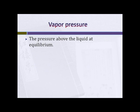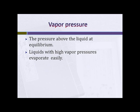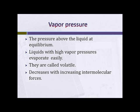Vapor pressure is the pressure above the liquid at equilibrium — that's how we define it. Liquids with high vapor pressures evaporate easily; they're called volatile. That includes things like nail polish remover, some solvents. A lot of perfumes and colognes have very high vapor pressures — otherwise you wouldn't detect their scent.